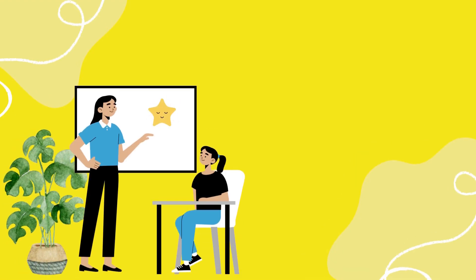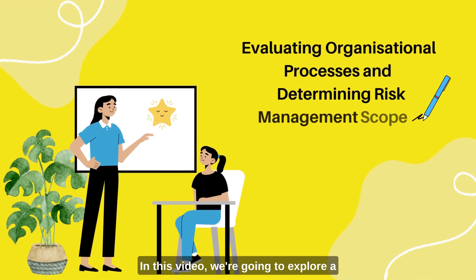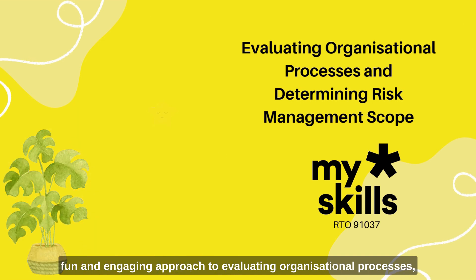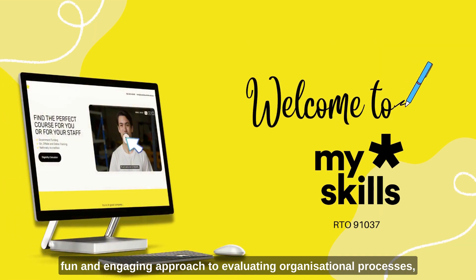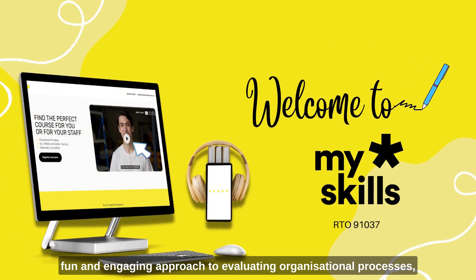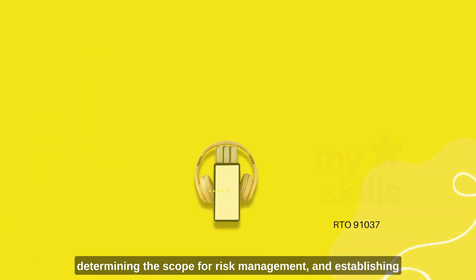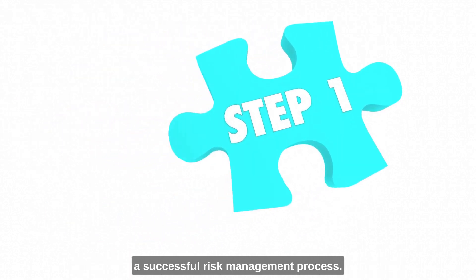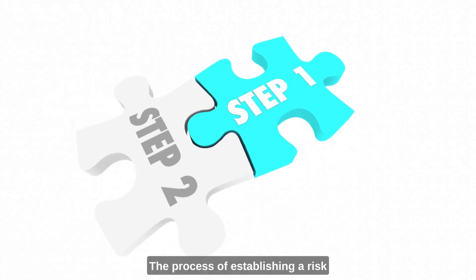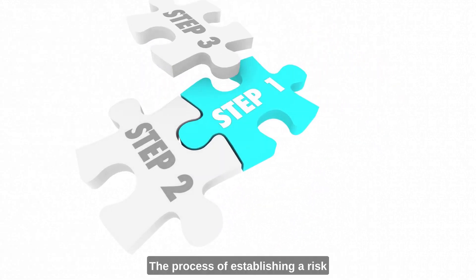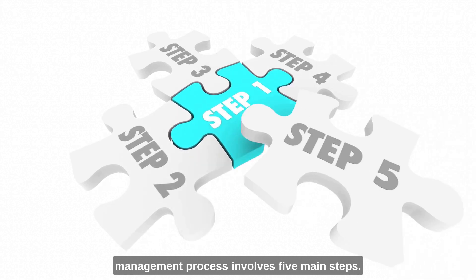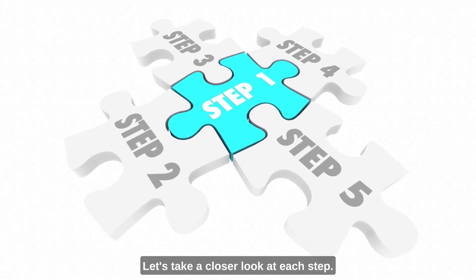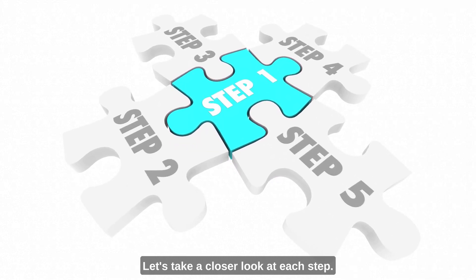Hello everyone. In this video, we're going to explore a fun and engaging approach to evaluating organizational processes, determining the scope for risk management, and establishing a successful risk management process. The process of establishing a risk management process involves five main steps. Let's take a closer look at each step.